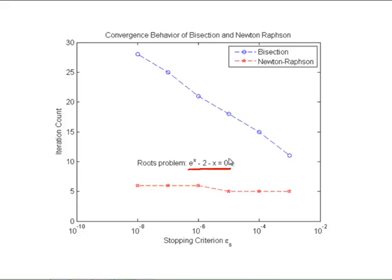Now the red results with the stars are for Newton-Raphson, and we see that Newton-Raphson only takes 5 or 6 iterations for each of these cases, whereas bisection ranged from about 11 iterations at the loosest tolerance all the way up to 28 iterations at the tightest tolerance. So it looks like Newton-Raphson, at least for this roots problem, is indeed quite a bit more efficient.